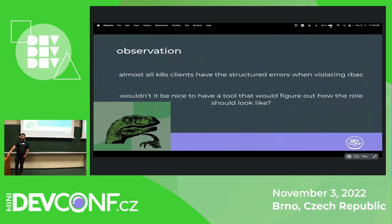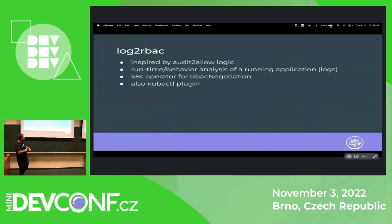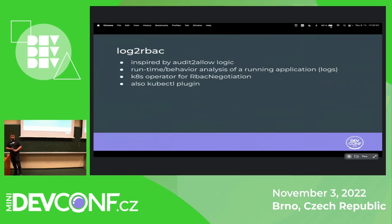I made an observation that most current Kubernetes clients have relatively stable error messages. They're structured, so whether you're using the Golang client, JavaScript client, Python client, or Java client, the messages when it comes to RBAC will be relatively similar. So wouldn't it be nice to have a tool that would basically scan your application during runtime and give you these RBAC rules? That's what log-to-RBAC does, and it's inspired by audit2allow logic — a tool for SELinux that was able to turn a breakage of a rule into a policy. I'm doing the same but at runtime: I run this operator next to your application, it scans the logs, and if there is an RBAC breakage it captures that event and turns it into a role.